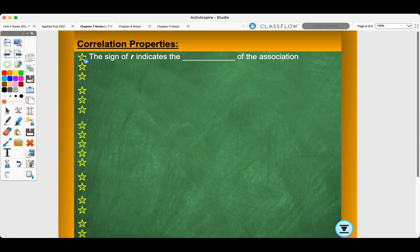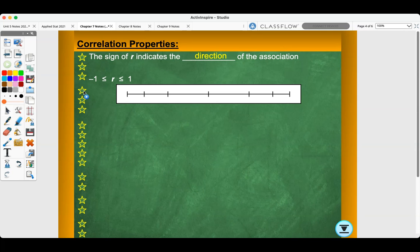Correlation properties. The sign of R indicates the direction of the association. Negative 1 is less than or equal to R, which is less than or equal to 1. So here we'll talk about how strong the correlation could be. So if I have a number line from negative 1 to 1, we use these numbers as our markers for how strong something is. So there is no correlation at 0.